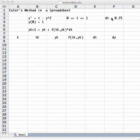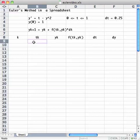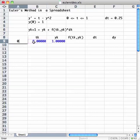So from 0 to 1, stepping by 0.25, my initial condition for t is 0, and my initial condition for y is 1. That's my initial t naught and y naught.